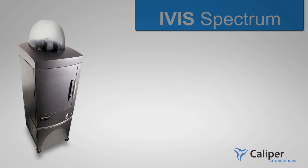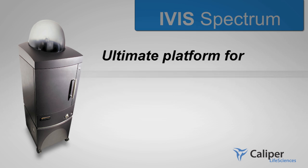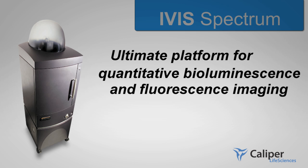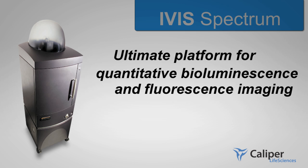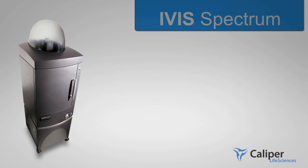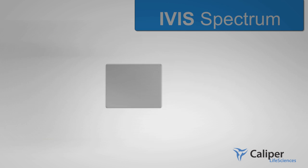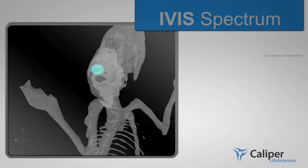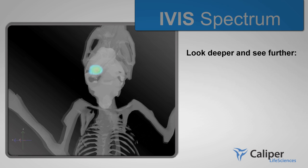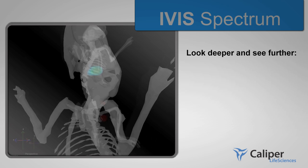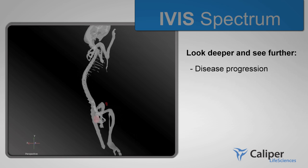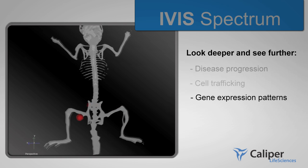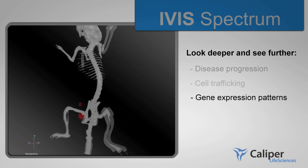The IVIS Spectrum is the ultimate platform for quantitative bioluminescence and fluorescence imaging, available from Caliper Life Sciences. With IVIS Spectrum's patented optical 3D imaging technology, you can look deeper and see further as you monitor disease progression, cell trafficking, and gene expression patterns in living animals.